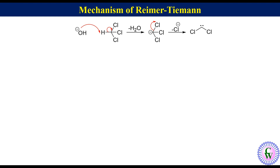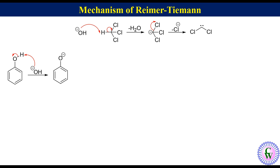Dichlorocarbene is an electron deficient species as there are only six electrons in the valence shell. As a result it acts as an electrophile. Phenol is an acid, and in the presence of hydroxide ion it gets deprotonated to produce phenoxide ion that has a very electron rich aromatic ring.